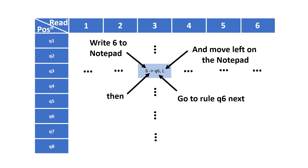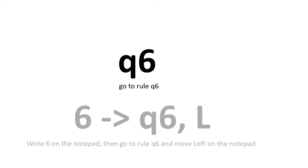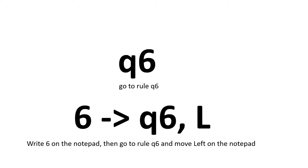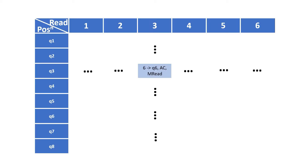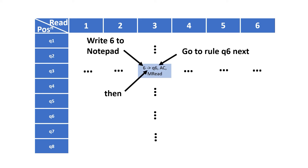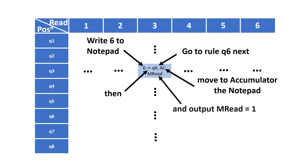Now we've made some changes to the rulebook, and I need to reflect this in the rulebook entries. Previously, I introduced this nomenclature meaning: write 6 on the notepad, then go to rule Q6 and move left on the notepad. But now we no longer move left or right — we jump directly to the location we're interested in, and we have some other signals such as MREAD and MWRITE to worry about. So I want this to read: write 6 on the notepad, then move to rule Q6, move the notepad to accumulator, and assert the MREAD signal.